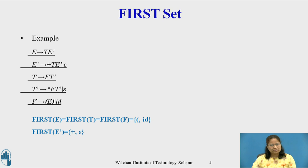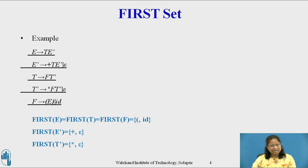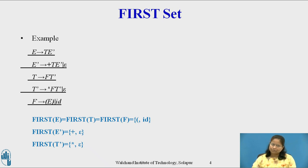To compute First(T'), consider the production T' derives * F T' or epsilon. First(T') = First(* F T') ∪ First(epsilon). First(* F T') = { * } since * is a terminal, and First(epsilon) = epsilon. So First(T') = { *, epsilon }.